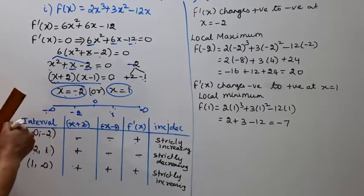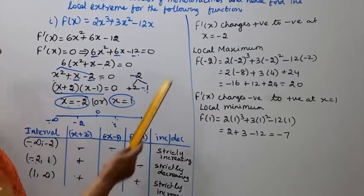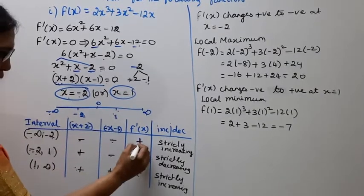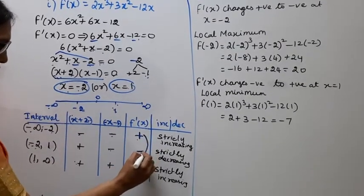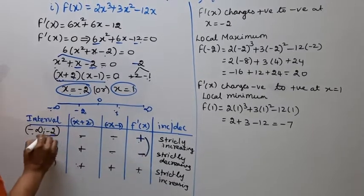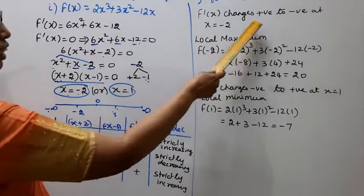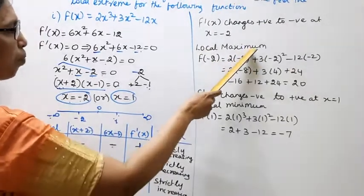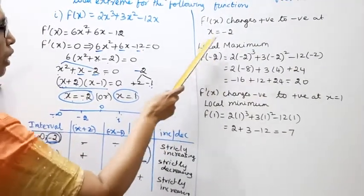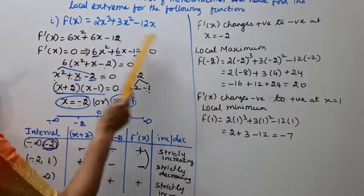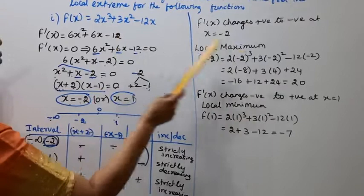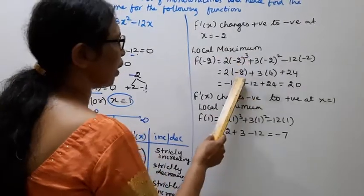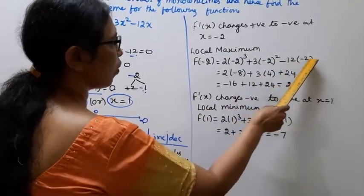f dash of x changes positive to negative at x equal to minus 2. f dash of x positive to negative, local maximum. Local maximum at x equal to minus 2. f of minus 2 is 2 into minus 2 cube plus 3 into minus 2 square minus 12 into minus 2.